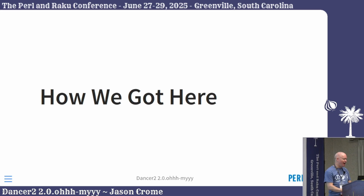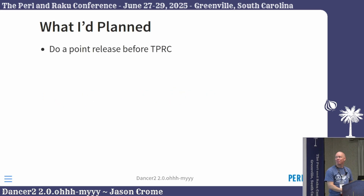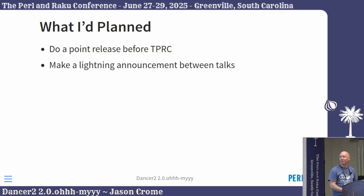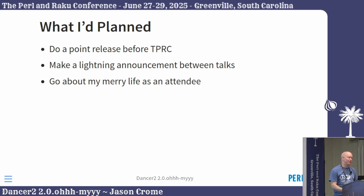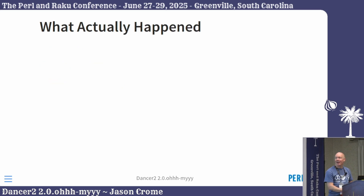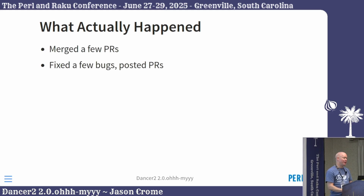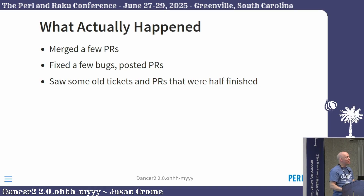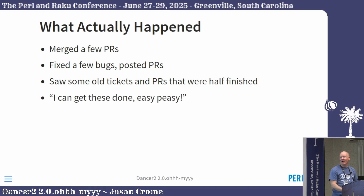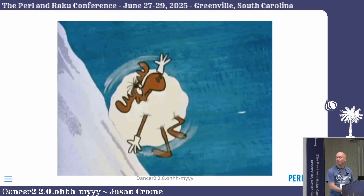How did we get here? What I'd planned was to do a little point release before the conference this year, make a little lightning announcement between talks, and go on with my merry life of just being a conference attendee. That's not what happened. Merged a few PRs, fixed a few bugs, posted a few more pull requests, saw some old tickets saying we're actually pretty close to getting some more stuff done. I can get these done. Easy peasy. Famous last words — as many of you know, you say that and things start to snowball a little bit.